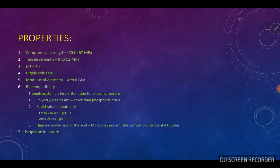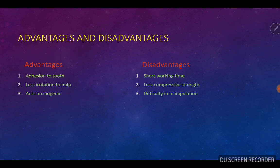Zinc polycarboxylic cement is opaque in nature. Advantages: adhesion to the tooth, less irritation to the pulp, and anti-carcinogenic property. Disadvantages: short working time, difficulty in manipulation, and low compressive strength.